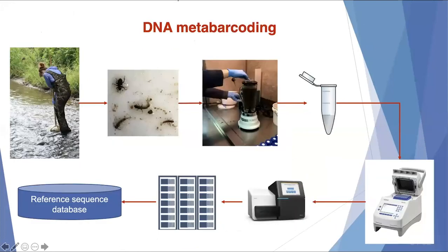The method we're using to collect data is DNA metabarcoding, also known as amplicon gene sequencing or marker gene sequencing in the literature. We collect freshwater macroinvertebrates from the bottom of riverbeds. These samples are homogenized, community genomic DNA is extracted, the DNA barcoding region of interest is amplified using PCR, and the composition of the original community is determined by comparing our sequences with a reference sequence database.